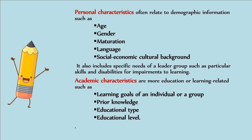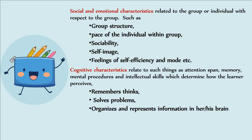Academic characteristics are more education or learning related, such as learning goals of an individual or a group, prior knowledge, educational type, and educational level. Social and emotional characteristics relate to the group or individual with respect to the group, such as group structure, pace of individual within group, sociability, self-image, and feelings of self-efficacy.